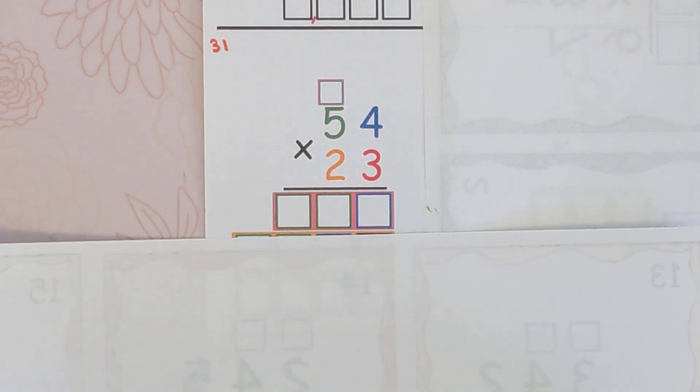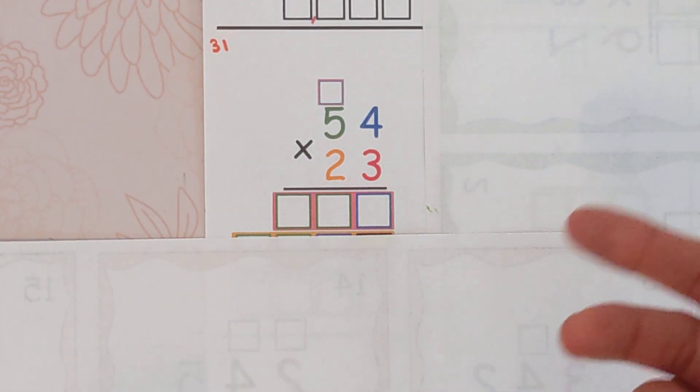I'm going to cover these rows up here and I'm just going to focus on the three. So we'll do three times four, three times five.